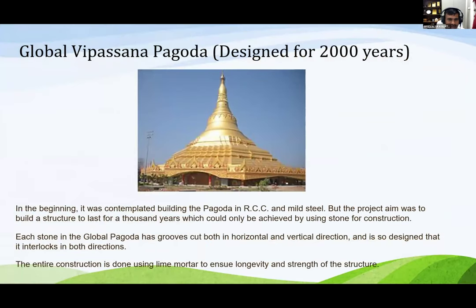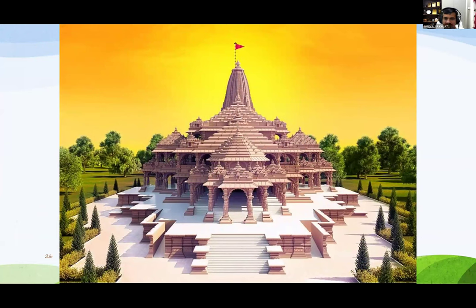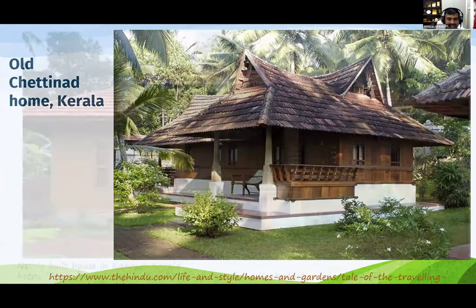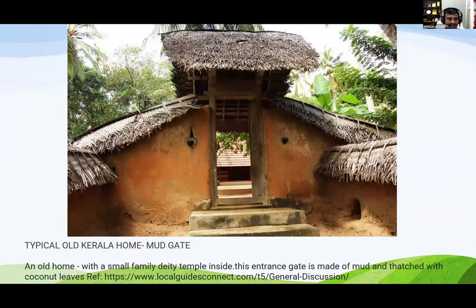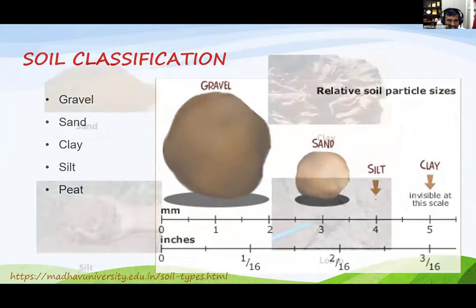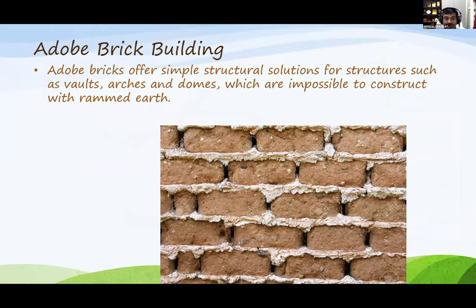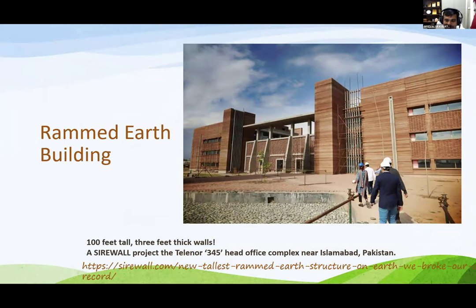This is the Global Vipassana Pagoda situated in Mumbai, where myself and my colleague Dr. Pavan are doing a funded consultancy project. They have not used any RCC or steel — it was completely built using masonry stones, designed to stay for 2000 years. Similarly, the Ayodhya temple opened recently was also completely built using stones and rocks. This is a 300-year-old home from Kerala. These are different types of mud houses, including a mud gate. Clay soil and silty clays are used for these, and we are aware of different types of earth buildings: adobe, rammed earth.